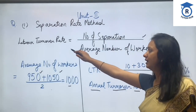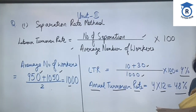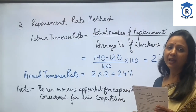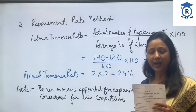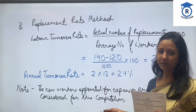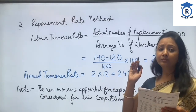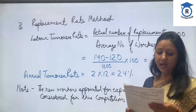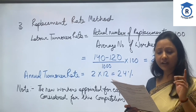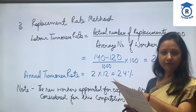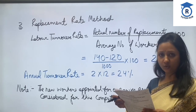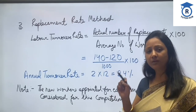Next is the Replacement Rate Method. The formula for this method is: Labor Turnover Rate = Number of Replacements divided by Average Number of Workers, multiplied by 100. Now, the workers recruited in the month is 140, including 120 for expansion.